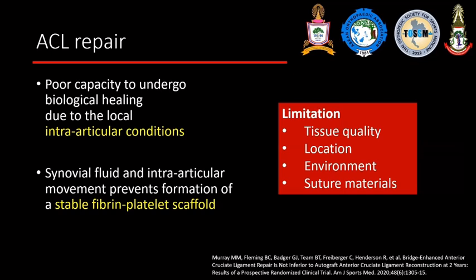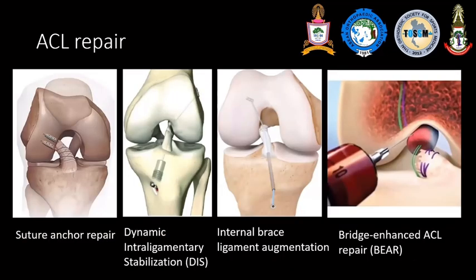With ACL repair, many factors influence the poor healing capacity. Biological healing in the intra-articular condition is limited because fluid and intra-articular movement can prevent the formation of a stable fibrin-platelet scaffold. The limitation of tissue quality, location, and environment does not promote the healing process. We can identify at least four techniques: suture anchor repair, dynamic intraligamentous stabilization, internal bracing with ligament augmentation, and enhanced ACL repair for mid-substance to promote healing.